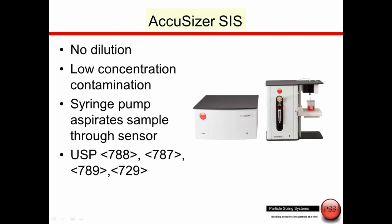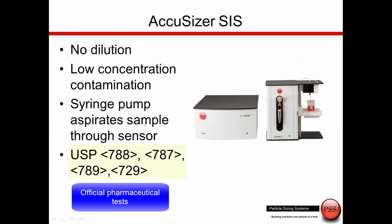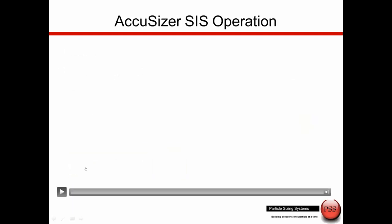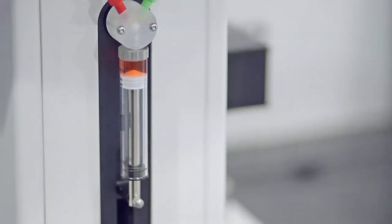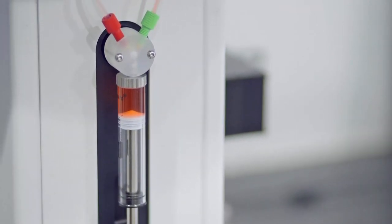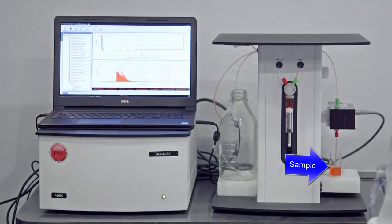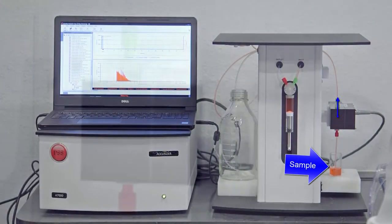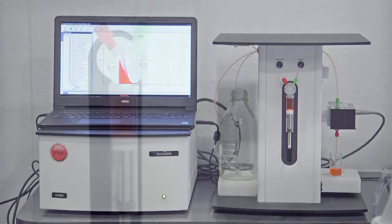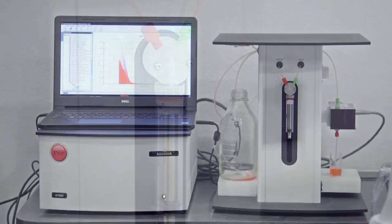This is the AccuSizer SIS, the syringe sampler. The sample is placed here and the syringe pump aspirates it up through the sensor. In this short video, you can see the syringe pump pulling down, moving the sample up through the sensor where the measurement is made. Then the syringe pump reverses and pumps the sample out to drain. This is the preferred system for many USP tests performed in the pharmaceutical industry.